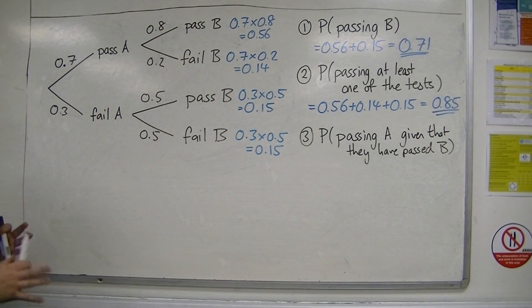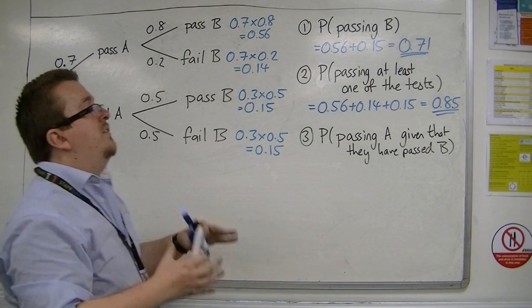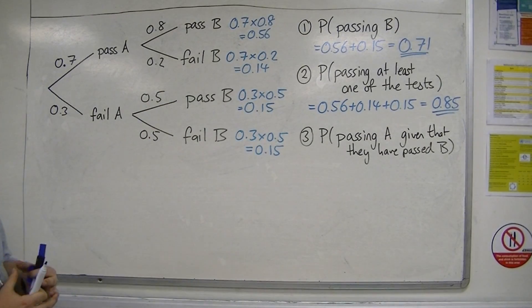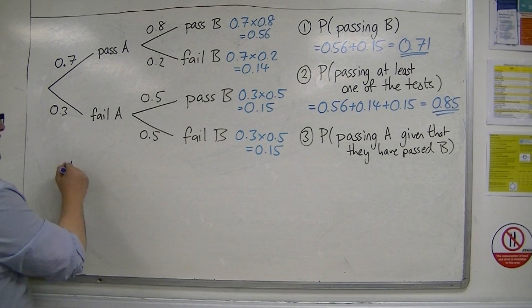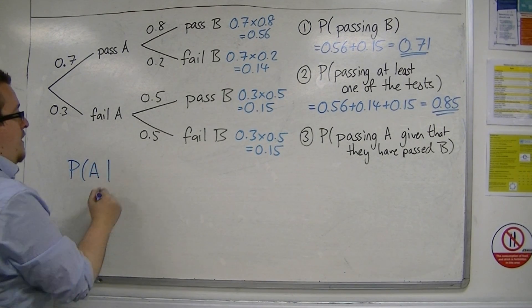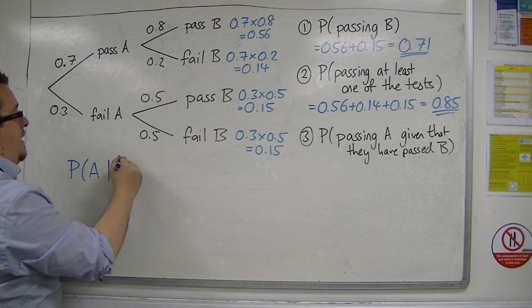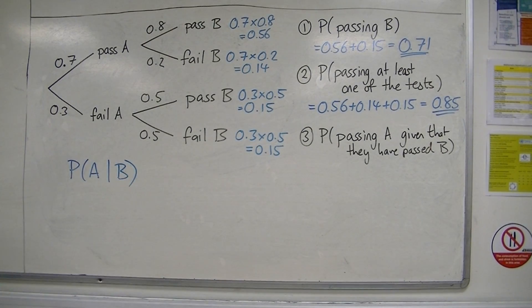The final question is the probability of passing A given that they've passed B.